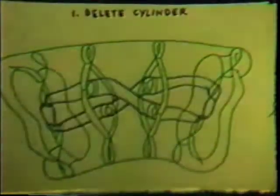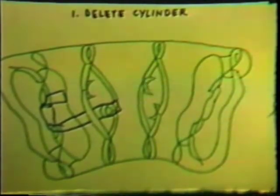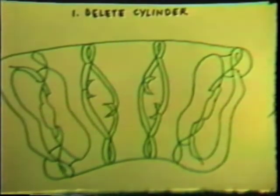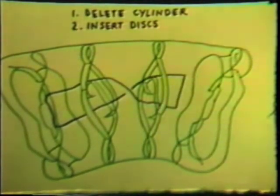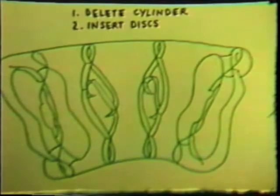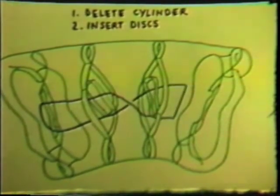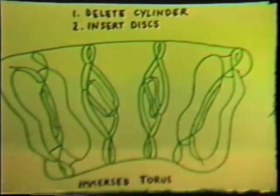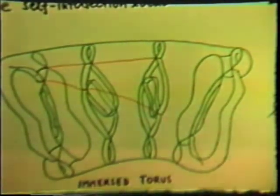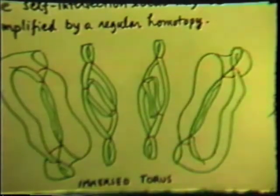First we delete the cylinder; we take it out piece by piece. Next we insert the discs, first one, and now the other. This is now an immersed torus. The red curve is checking the self-intersection locus. We simplify it by a regular homotopy.